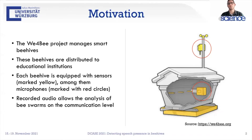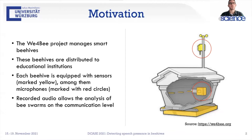These beehives are distributed to educational institutions worldwide, but mainly in Germany. Each beehive is equipped with sensors, which we have marked yellow in the picture on the right. Among these sensors are also microphones, marked with red circles in the right image, and the microphones are inside these boxes. With the recorded audio we can analyze the bee swarms on the communication level.